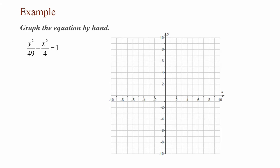In this example, graph the equation by hand: y² / 49 − x² / 4 = 1. I have a minus sign, so I know I have a hyperbola. Since y² / 49 is to the left of the minus sign, it matches y² / b² − x² / a² = 1. Here a² = 4, so a = ±2, giving points at (2, 0) and (−2, 0). And b² = 49, so b = ±7, giving points at (0, 7) and (0, −7).